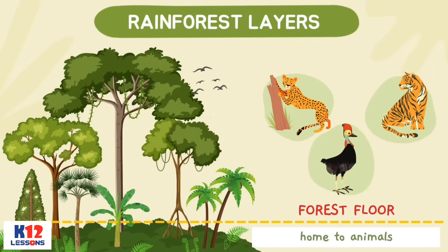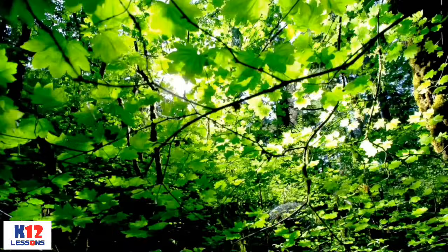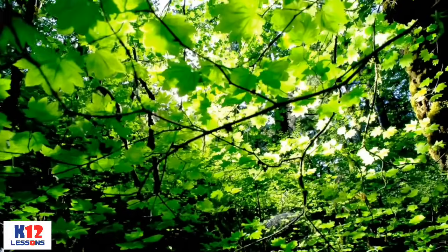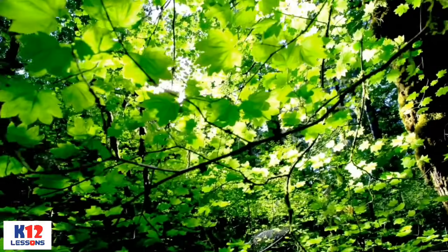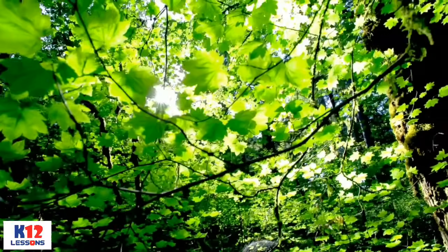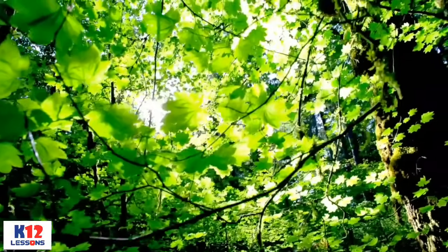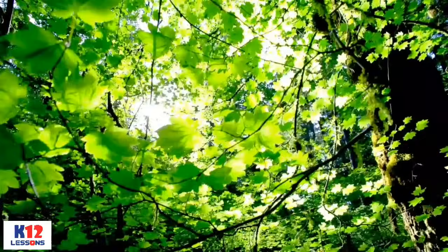The forest floor is home to animals like jaguars, tigers, and cassowaries, which thrive in the deep shade part of the forest where plant life is thin. This is because only a small percent of sunlight gets through the thick canopy and understory and reaches the forest floor.